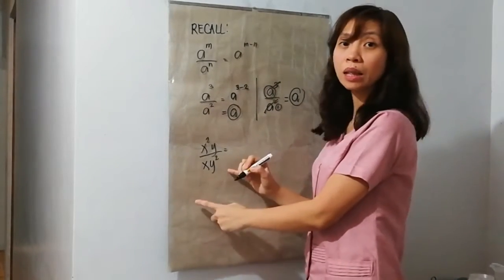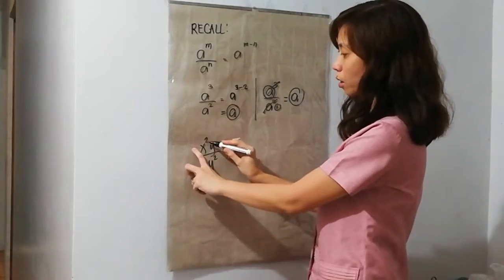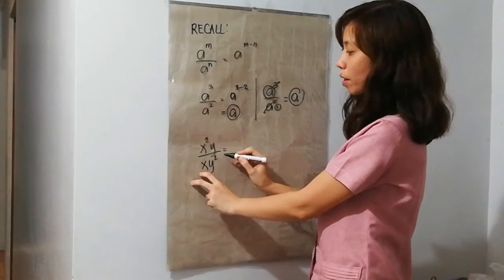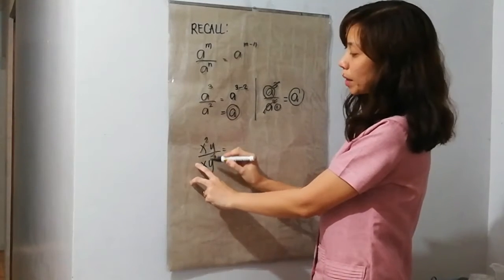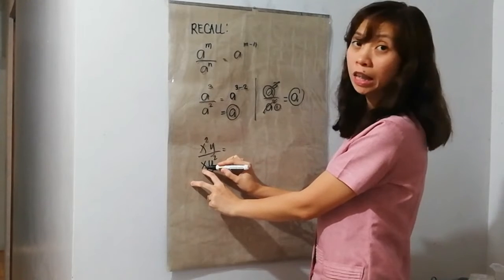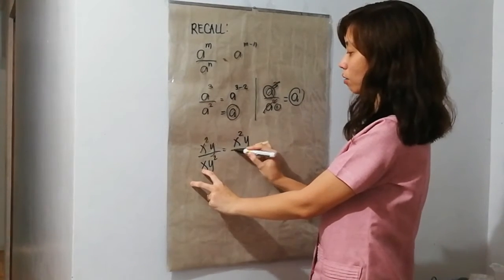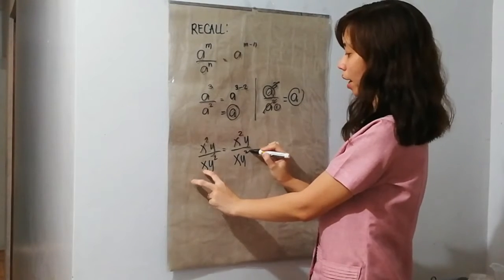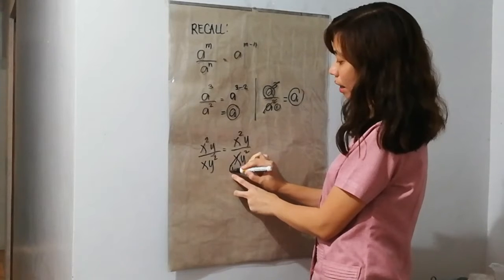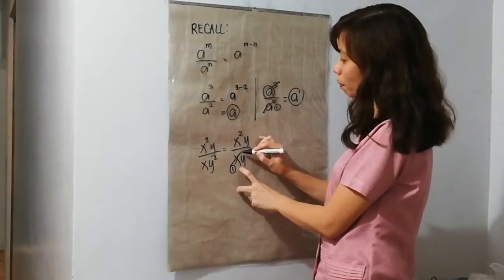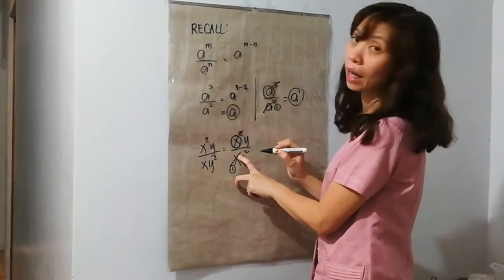So, ito na lang gawin natin dito, since mas madali yun. We have x squared y over xy squared. x squared at x, pareho sila. Ang pinakamalit na exponent ay yung x. So, ito ang matitirahan na lang ng 1. So, 2 minus 1, ang exponent, meron ka pang matitirang isang x.